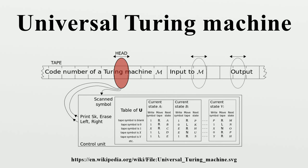Turing used seven symbols — A, C, D, R, L, N — to encode each five-tuple, as described in the article Turing machine. His five-tuples are only of types N1, N2, and N3. The number of each M-configuration is represented by D followed by a unary string of A's; e.g., Q3 equals DAAA. In a similar manner he encodes the symbols: blank as D, the symbol 0 as DC, the symbol 1 as DCC, etc. The symbols R, L, and N remain as is. After encoding, each five-tuple is then assembled into a string in order as shown in the following table.